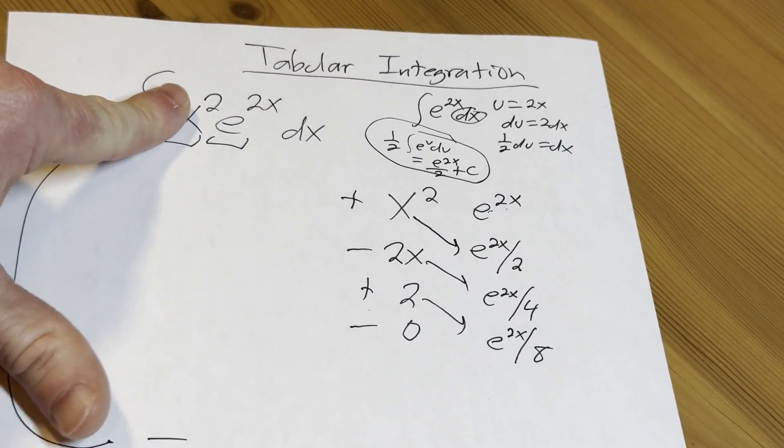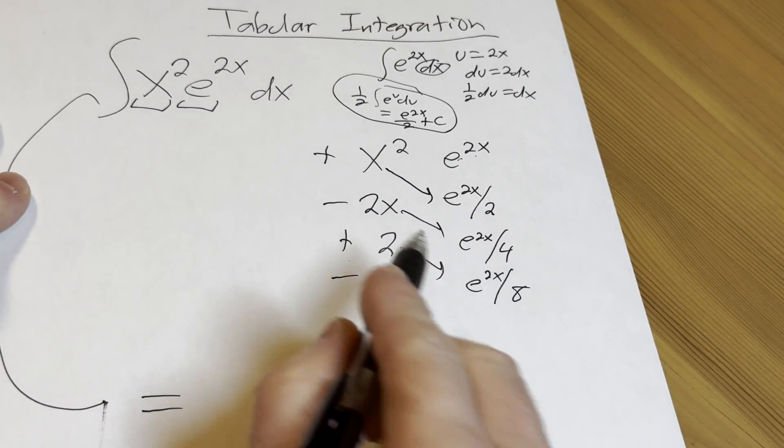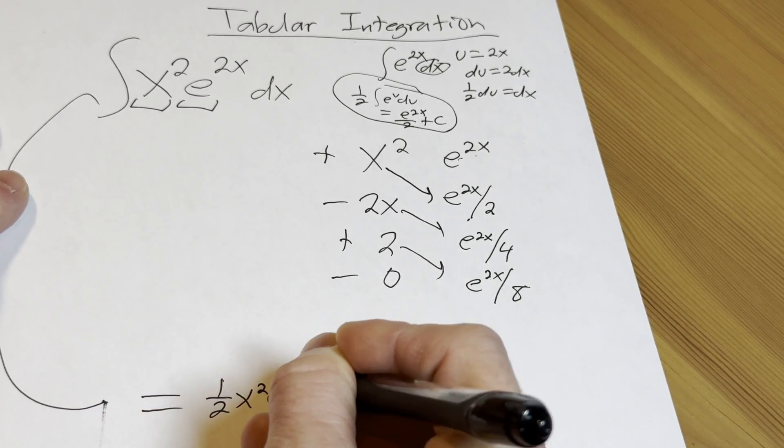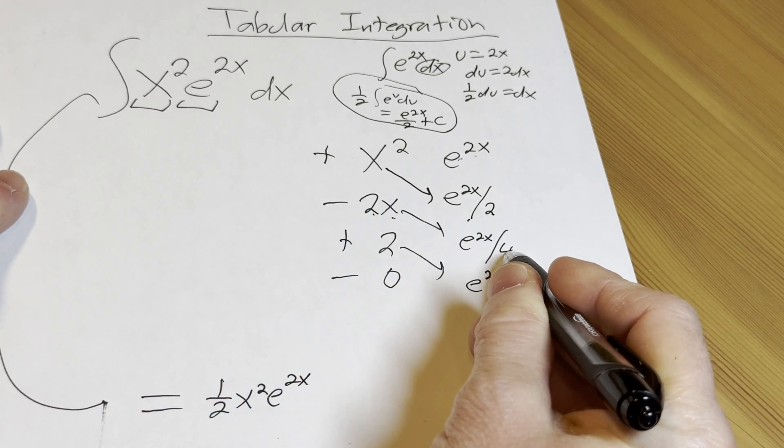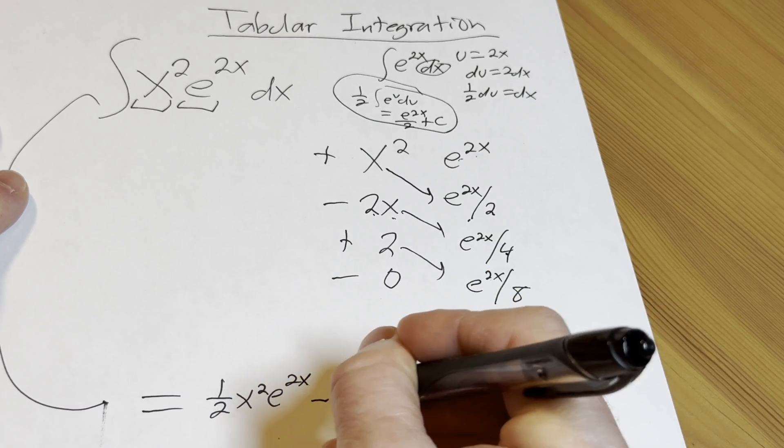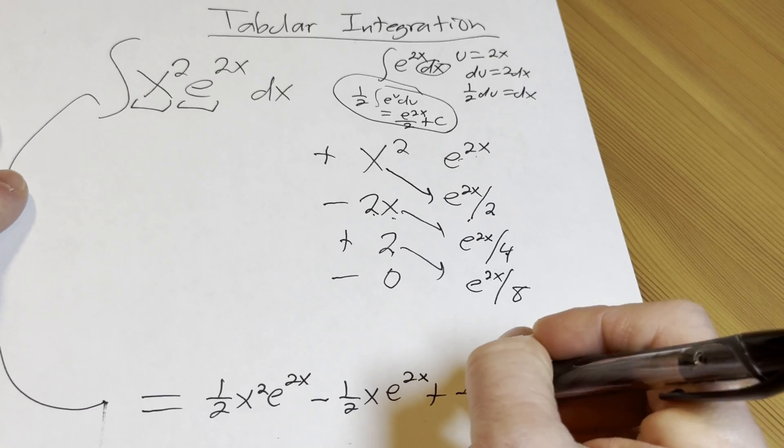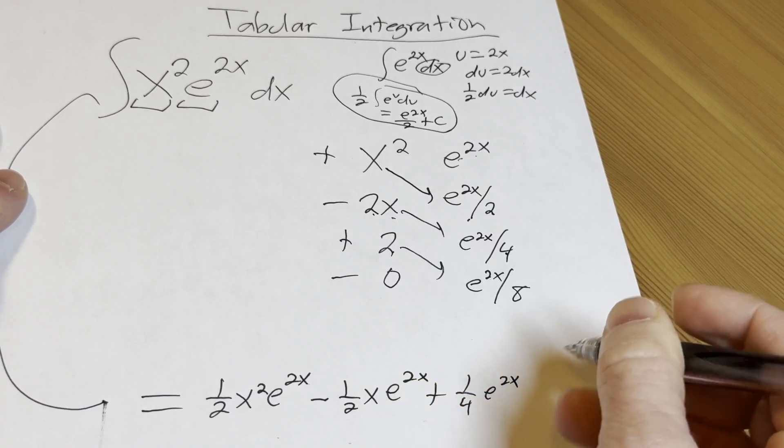So this integral is equal to x squared times this, so I'm going to pull out that one half, and then minus 2x times this. That's going to be minus one half x e to the 2x, and then 2 times 8, that's going to be one fourth e to the 2x. Then we just add our C, and boom, there it is. Super quick and easy.